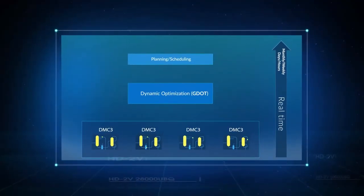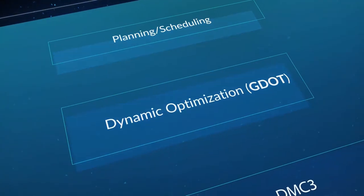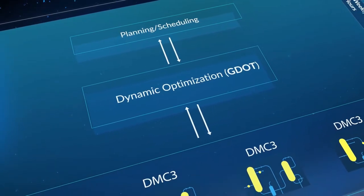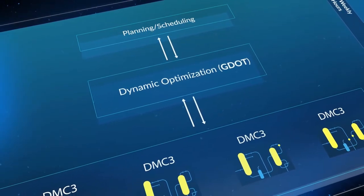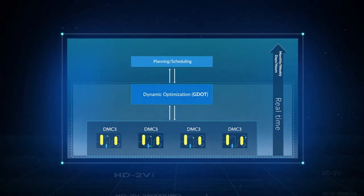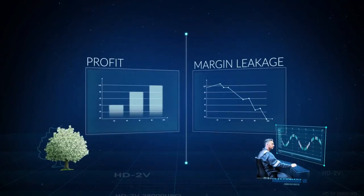With Aspen DMC3 controllers, you also have a strong foundation for site-wide dynamic optimization with Aspen GDOT. This technology coordinates multiple APCs in closed loop and optimizes broad envelopes in real time to align planning, scheduling, and operation, significantly reducing margin leakage.